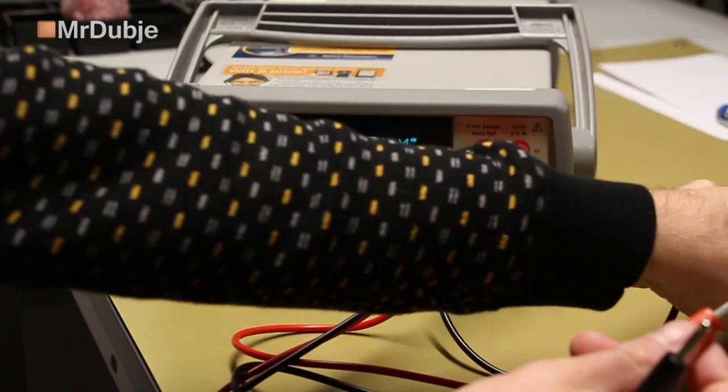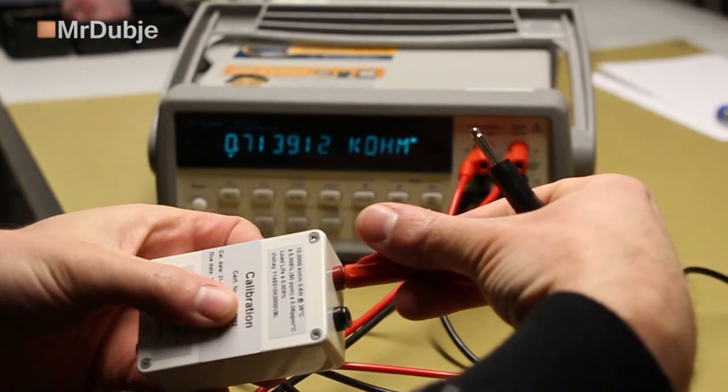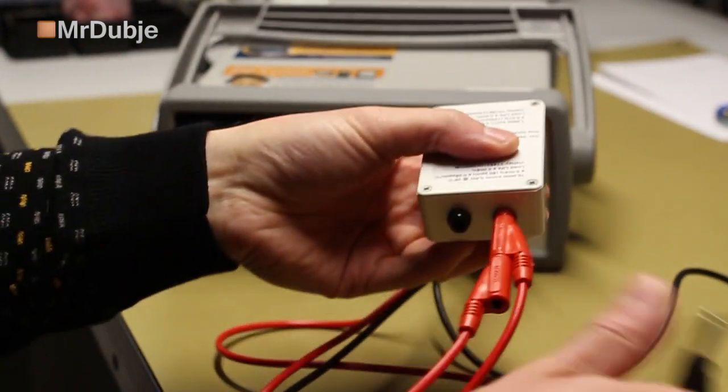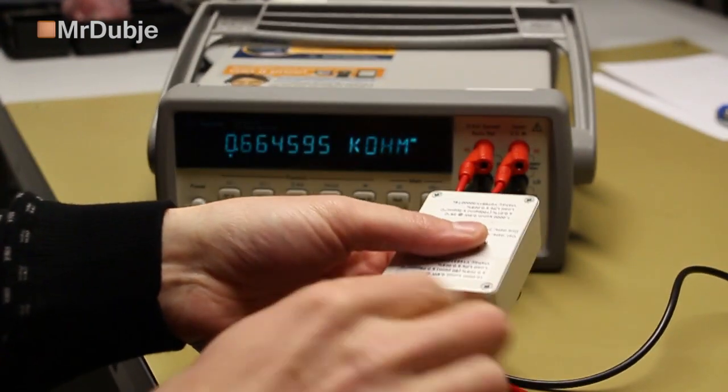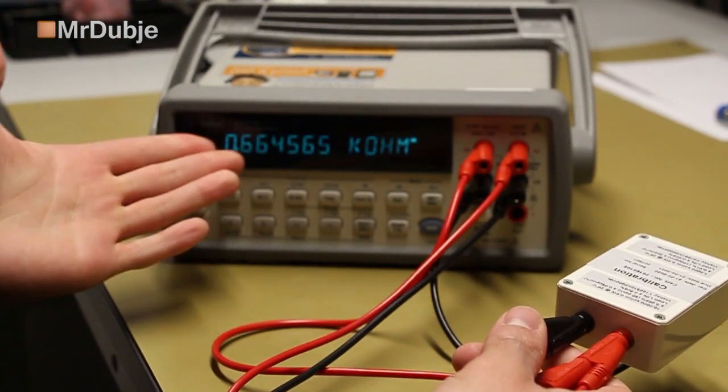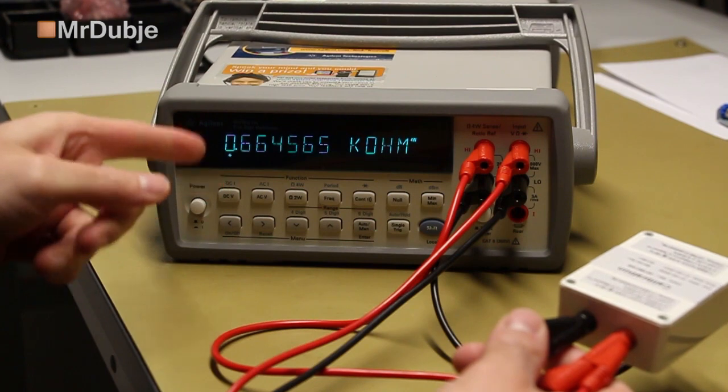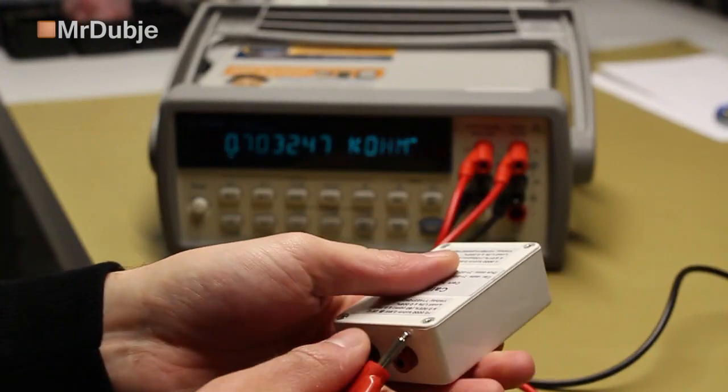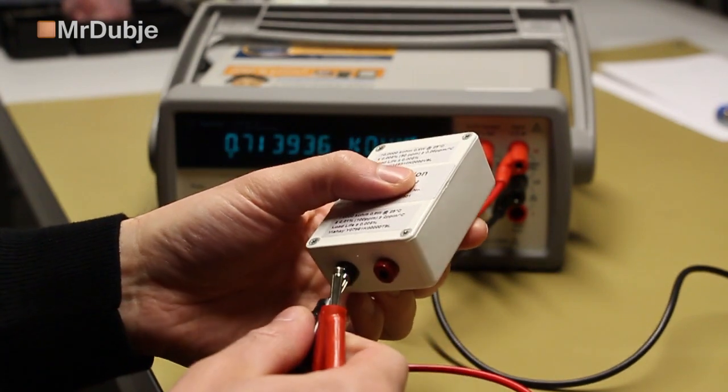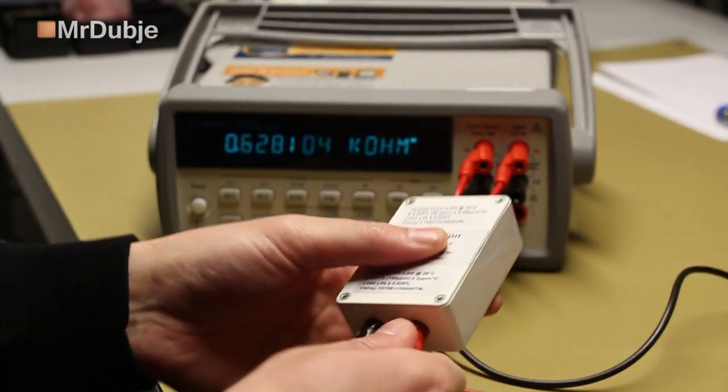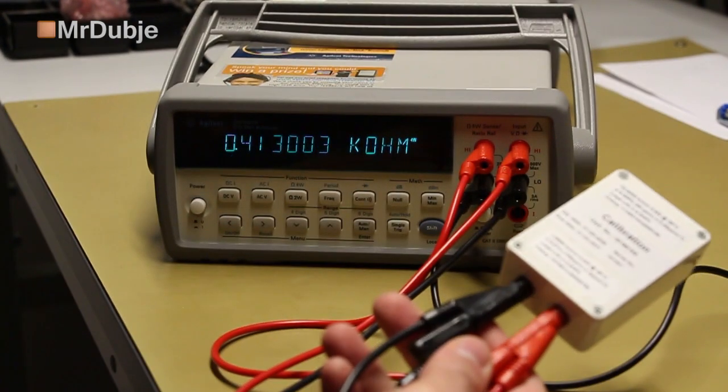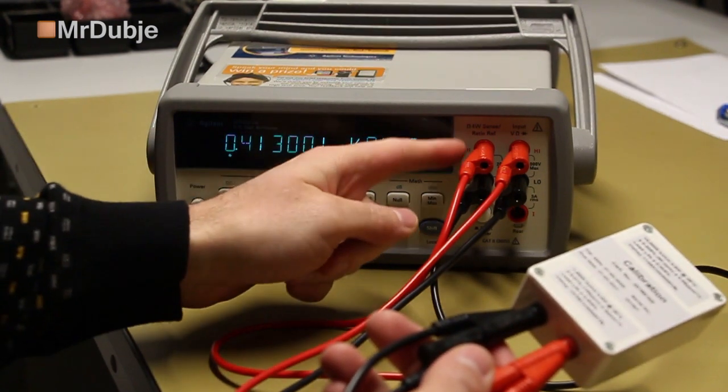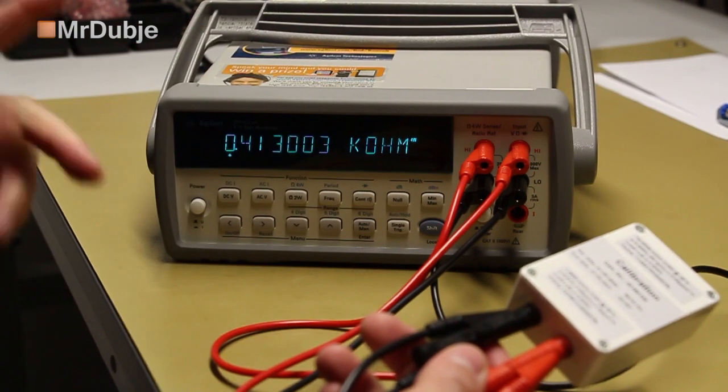So when I connect this up to, what is it, 10 kilo ohms, let's take 10 kilo ohms. It's, yeah, it actually, there was a resistance in parallel apparently, because it actually drops the reading. And when I switch it to 1 kilo ohm, so apparently there is a resistance between the high and low sense terminals on the front. But only on the front.